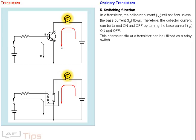Switching function: In a transistor, the collector current IC will not flow unless the base current IB flows. Therefore, the collector current can be turned on and off by turning the base current IB on and off. This characteristic of a transistor can be utilized as a relay switch.